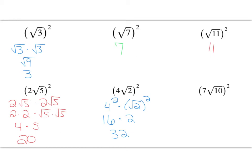Try this: (7√10)². Tell me what you get. I got 490. 7² is 49, the square root of 10 squared is 10, and 49 times 10 is 490.